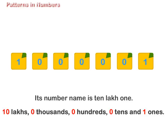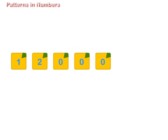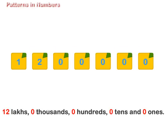Its number name is ten lakh one. 12,00,000 stands for 12 lakhs, 0 thousands, 0 hundreds, 0 tens and 0 ones.